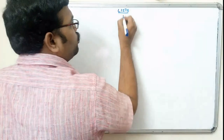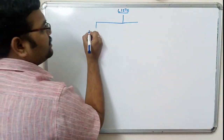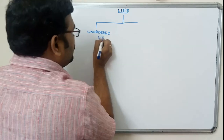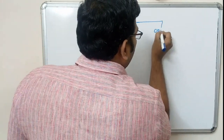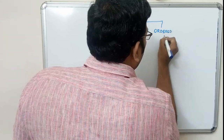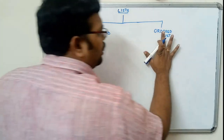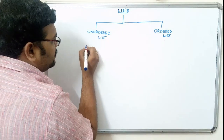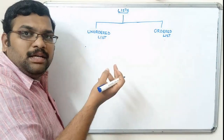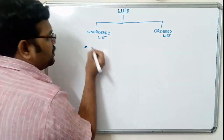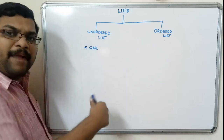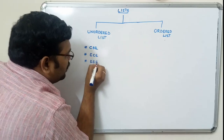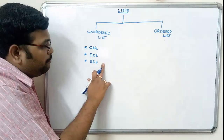Basically, this list consists of two types: one is unordered list and the other is ordered list. What is the difference between them? In the unordered list, instead of using numbers, we will use symbols. For example, star CSC, star ECE, star EEE — we are listing the data using some symbols.